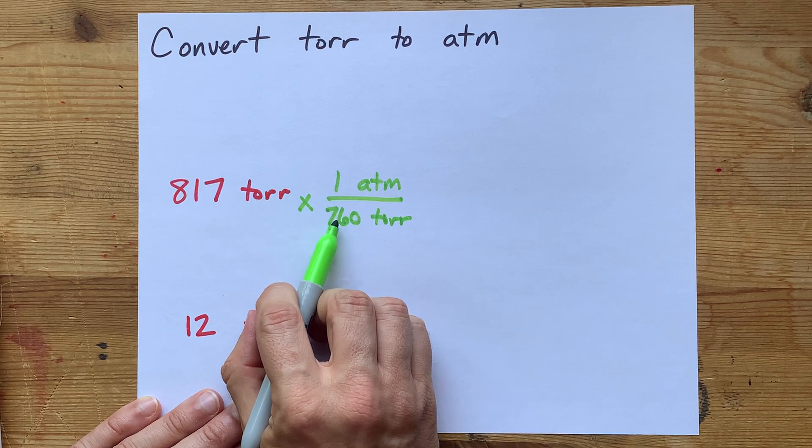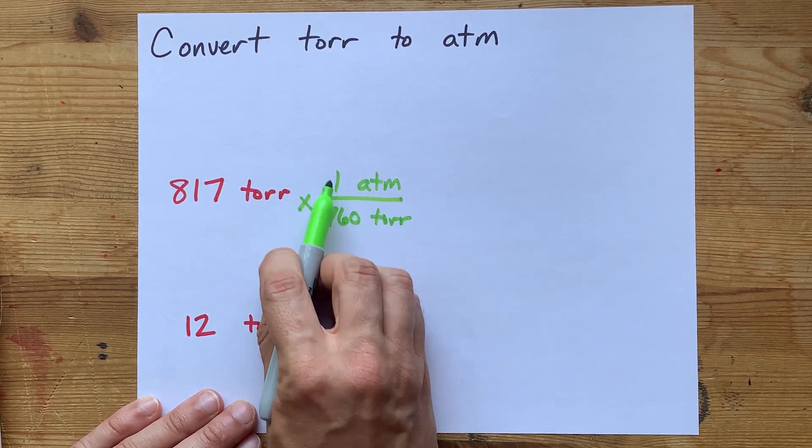One atmosphere of pressure is the same as 760 torr. So you're going to exchange 760 torr for a single atmosphere.